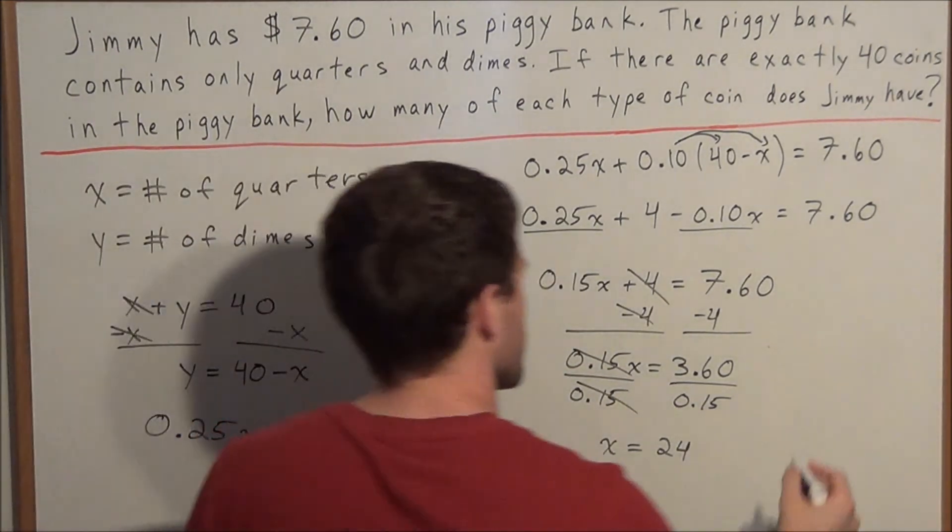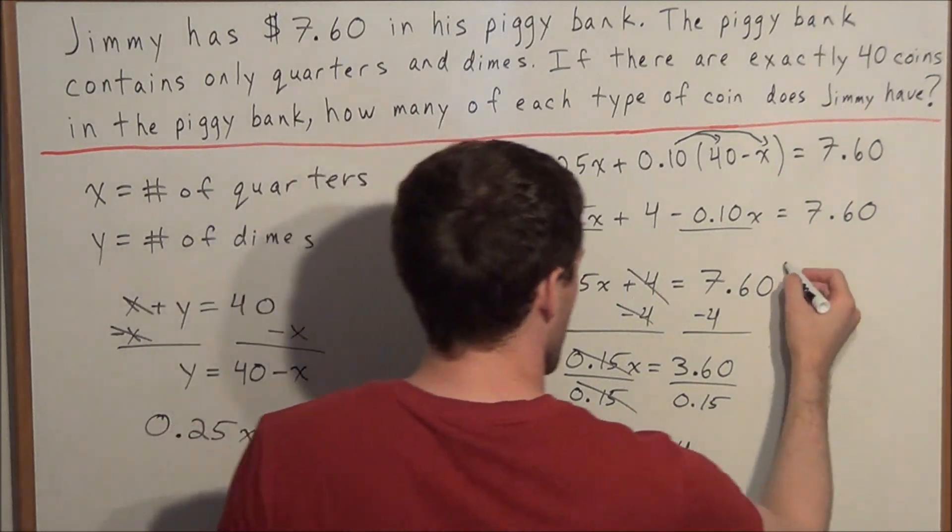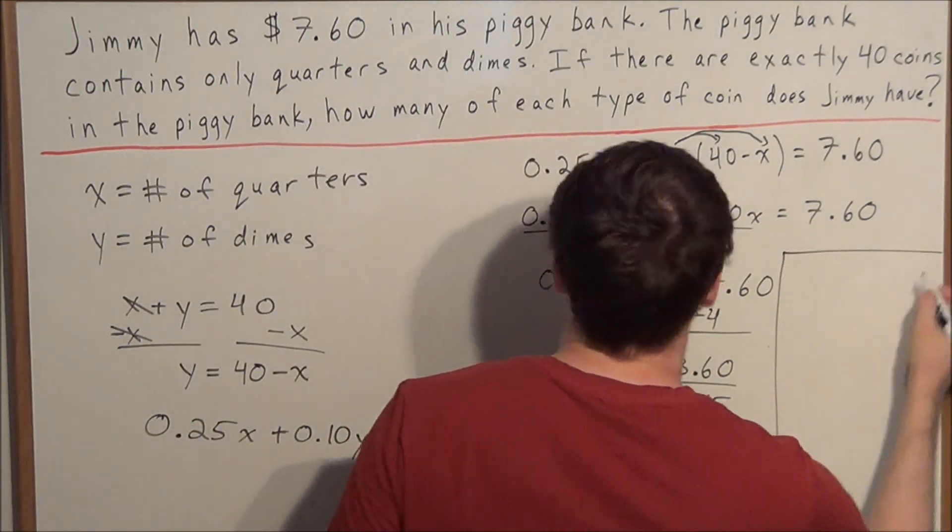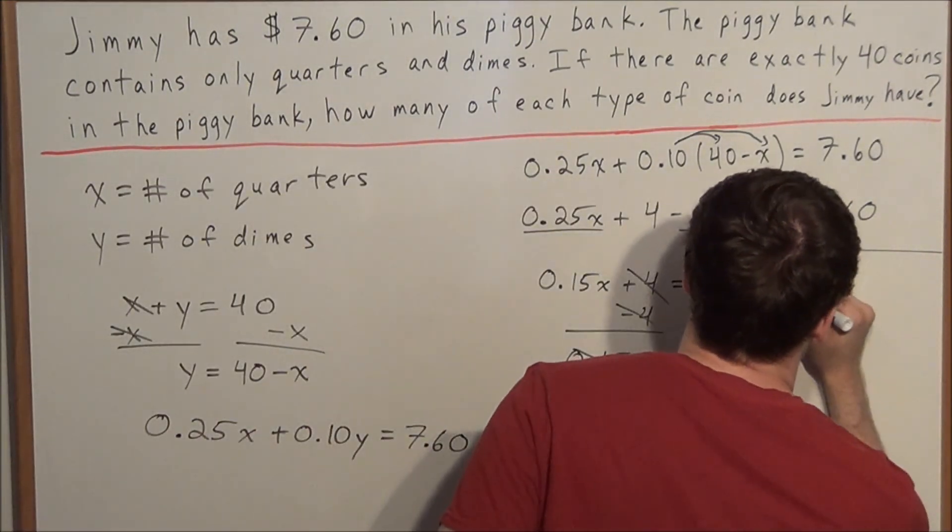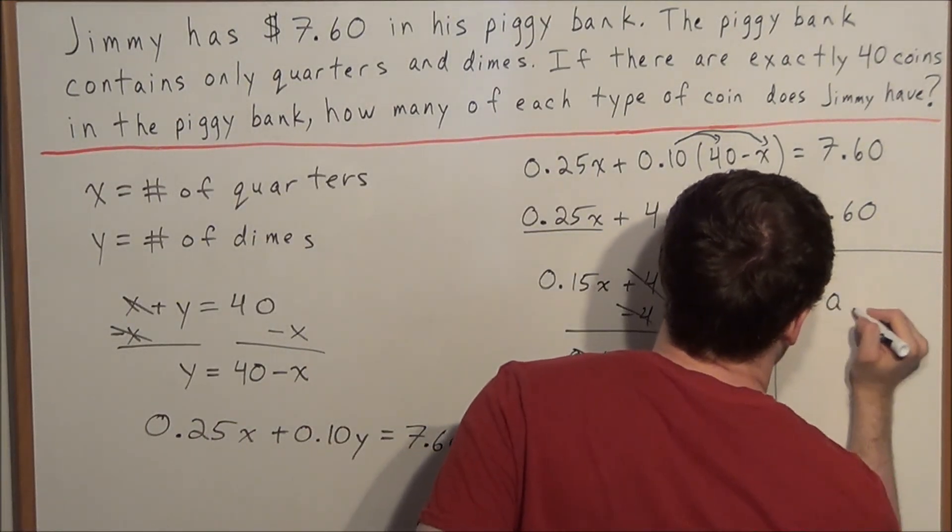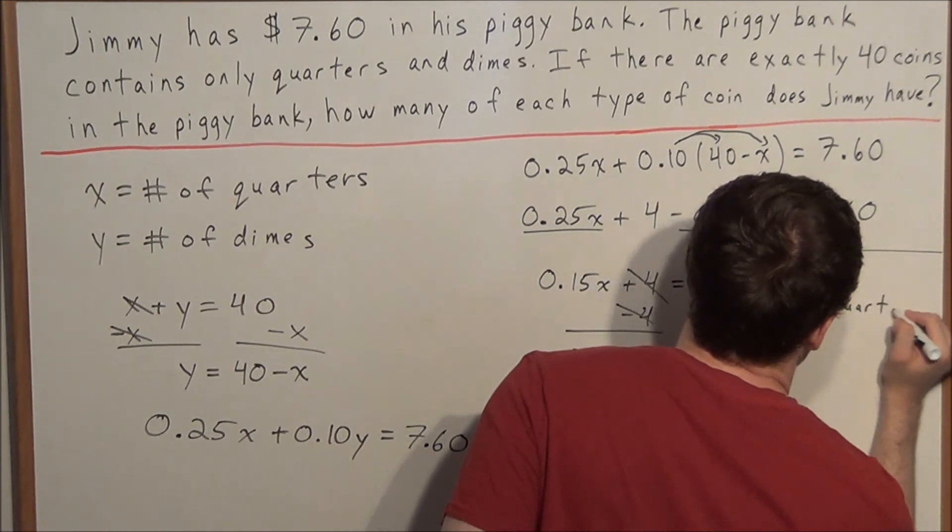So now we can start writing down our answer. We have x equals 24. Remember, x is the number of quarters. So there are 24 quarters in Jimmy's piggy bank.